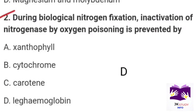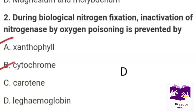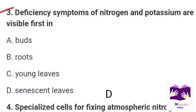Next question: During biological nitrogen fixation, inactivation of nitrogenase by oxygen poisoning is prevented by? Option A: anthophyll. Option B: cytochrome. Option C: carotene. Option D: leghemoglobin. Correct option is Part D: leghemoglobin.